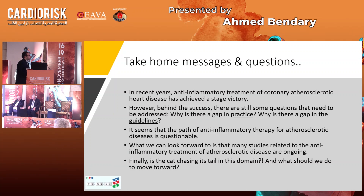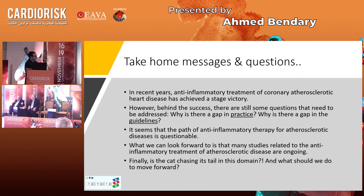Behind the success, there are still questions to address. Why is there a gap in practice? Because you have to be convinced by the guidelines. Regarding colchicine, I'm starting to use colchicine since one and a half years after the trial, because there is already evidence and the guideline is class 2B. I'm using it if there is a recurrent event for the patients — as part of their residual risk — because it's a low-cost drug. Canakinumab is very expensive and I can't use it. Low-dose methotrexate failed, and six drugs failed overall.